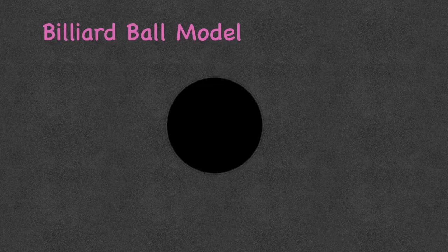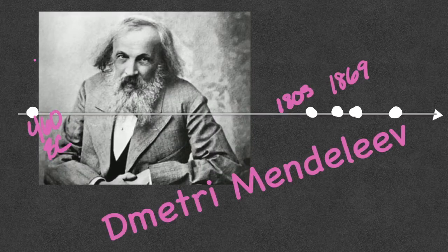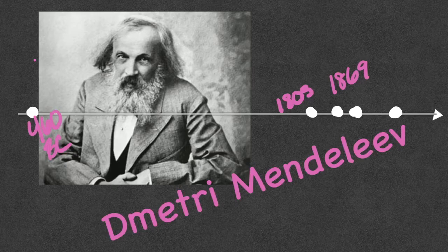Now I'm going to take a tiny detour away from the atomic model and talk about Dmitry Mendeleev, who fits on our timeline at 1869. Dmitry Mendeleev was the first person to put together elements on the periodic table and realize that when elements are placed in a certain order, different properties arise. We give him the title of father of the periodic table.